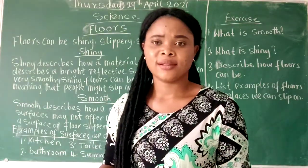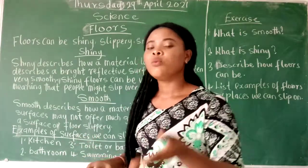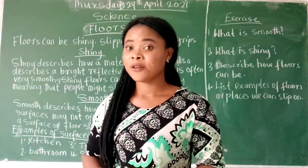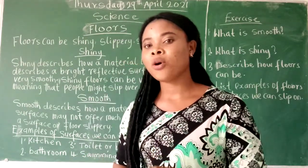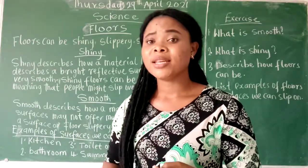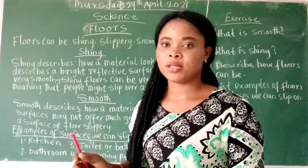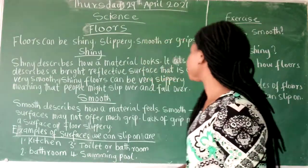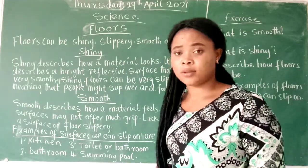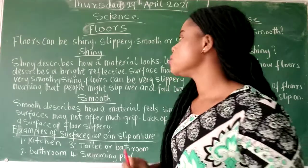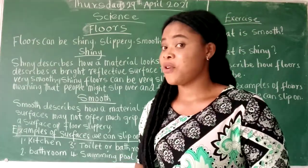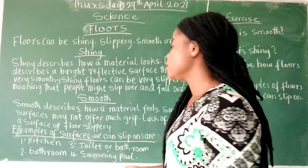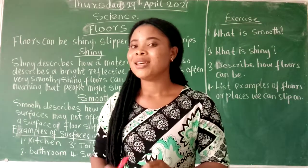So what is shiny? Shiny describes how a floor looks. Shiny is a bright, reflective surface. It's very bright — you can see it very bright and clean, and it reflects. Shining surfaces are often very smooth. Shining floors can be very slippery, meaning that people can slip on it and fall over, because it is very smooth.